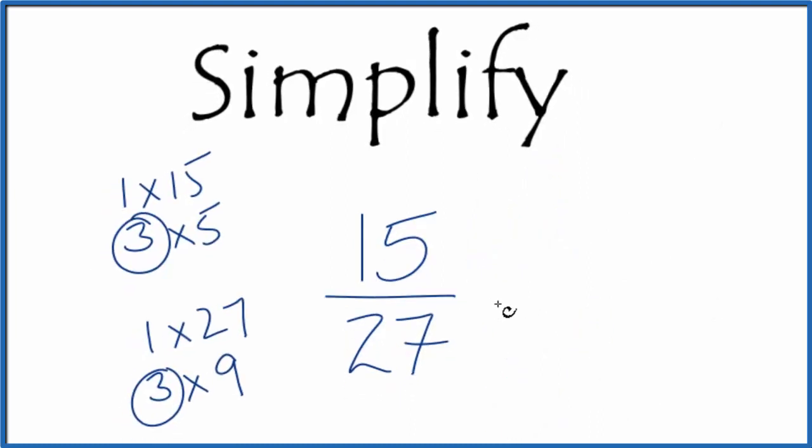So we divide 15 by 3, that gives us 5, and then 27, we divide that by 3, that gives us 9.